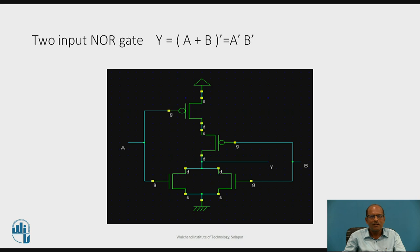Now let us design a 2-input NOR gate. Y is equal to (A plus B) bar. Using De Morgan's theorem, it is equal to A bar times B bar. Therefore Y equals A bar B bar, which is AND logic — two PMOS should be connected in series for the pull-up network. The dual of the pull-up network is the pull-down network, which has two NMOS connected in parallel. So two PMOS in series form the pull-up network and two NMOS in parallel form the pull-down network, as shown in the figure — this is the 2-input NOR gate.